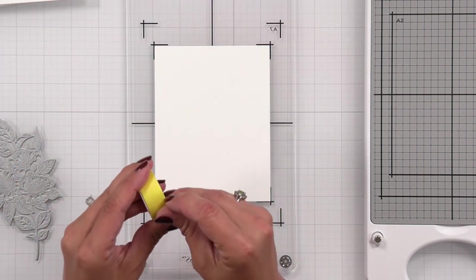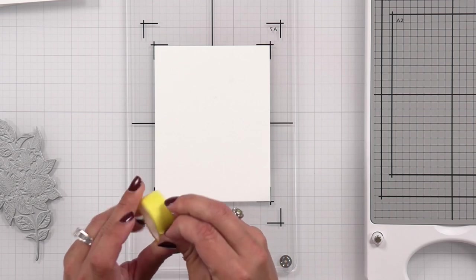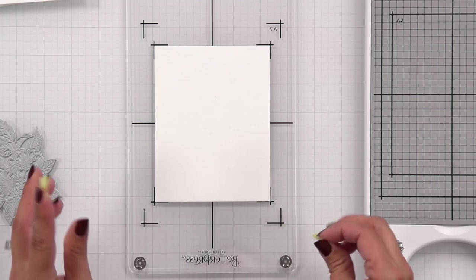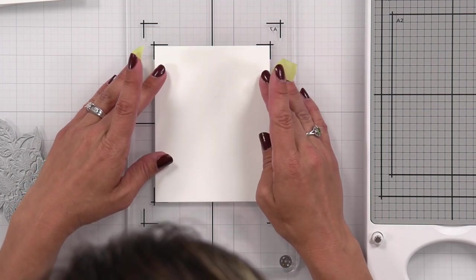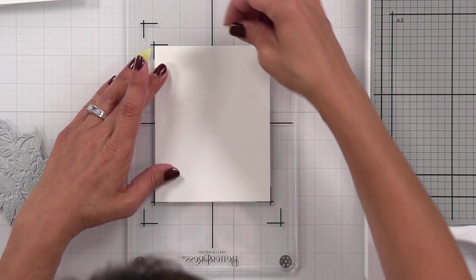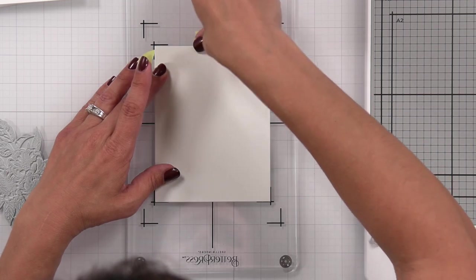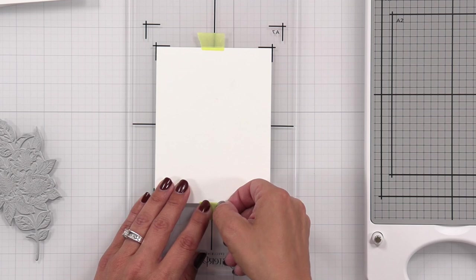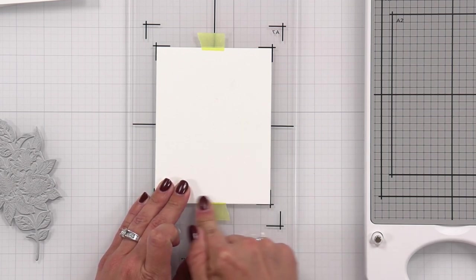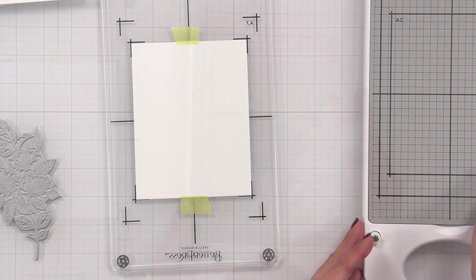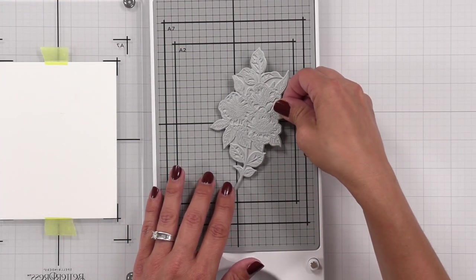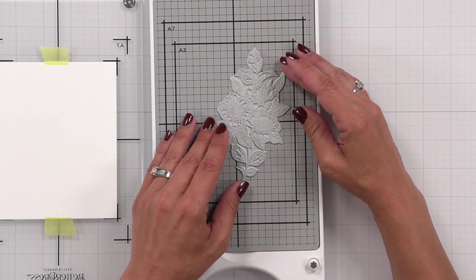When they say this is a foolproof system it really is. I was honestly kind of intimidated at first. I don't know why. It's always scary doing something for the first time. But it really is easy. So the first thing I did is took one of their specialty cardstocks. I placed it within the A2 size grid lines and I'm holding that down with the best ever craft tape. You can tape it on the top and bottom like I did or up in the corners.